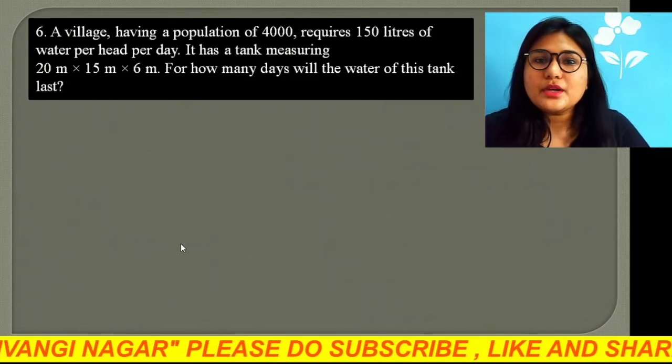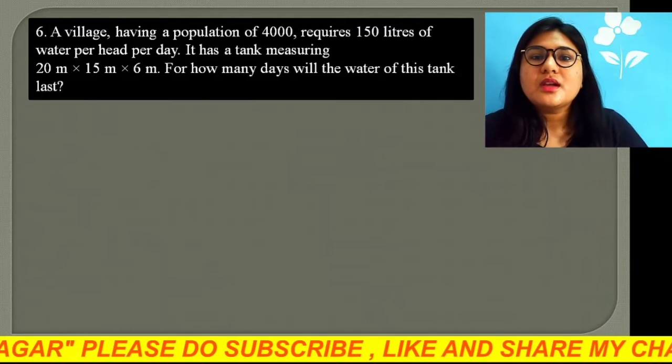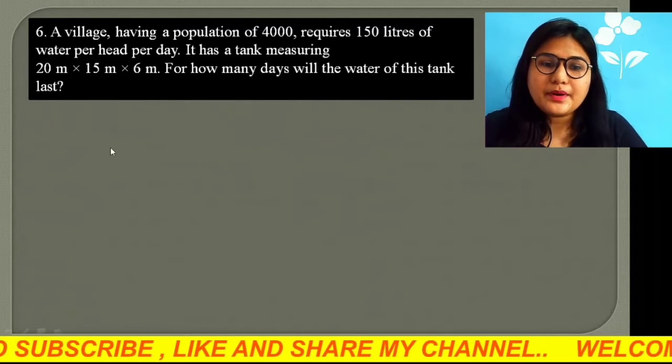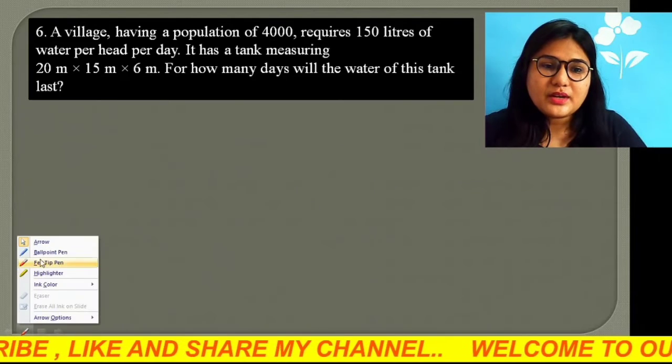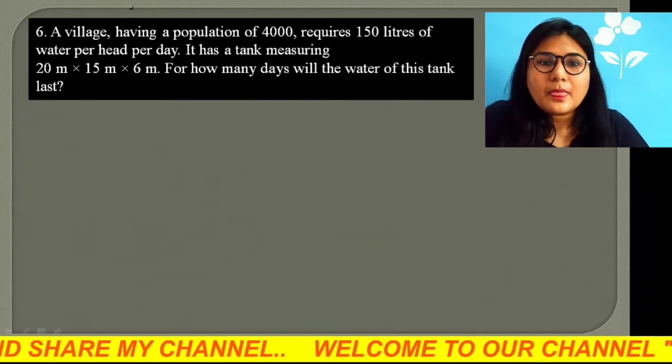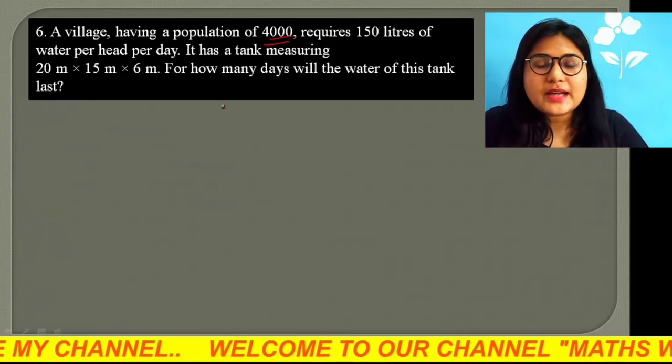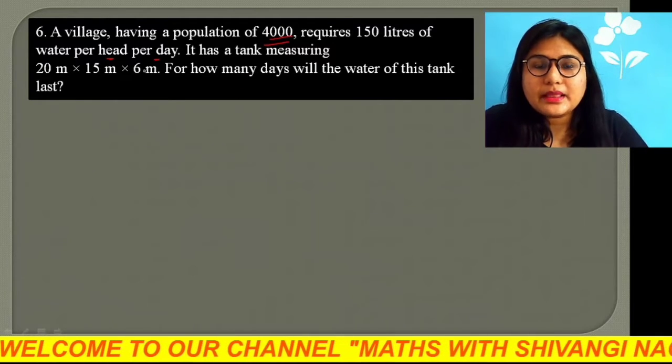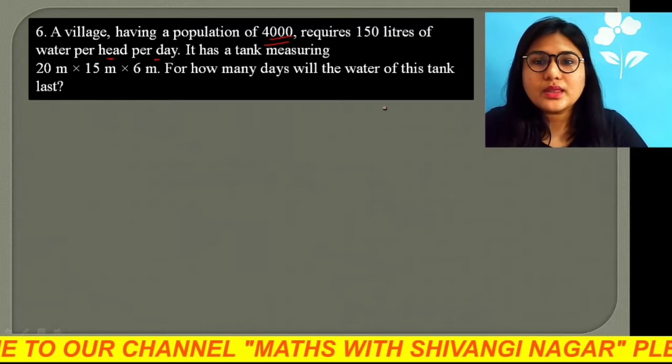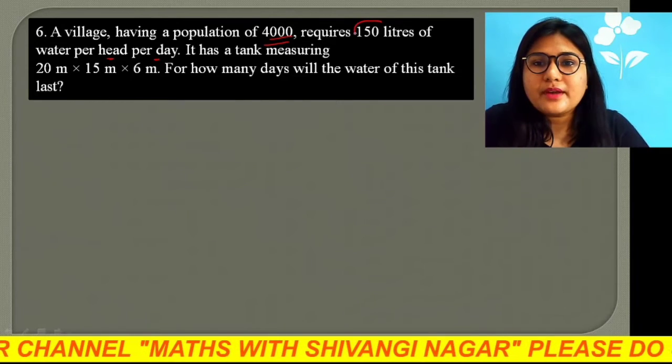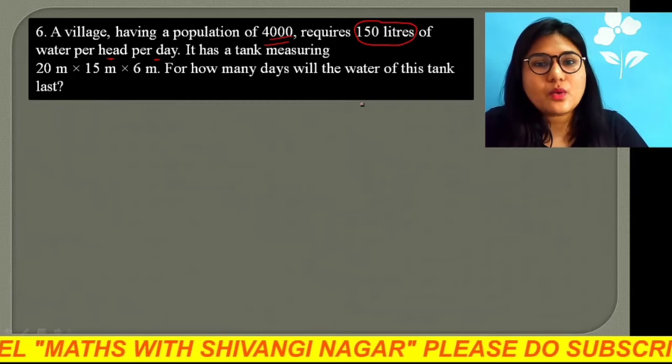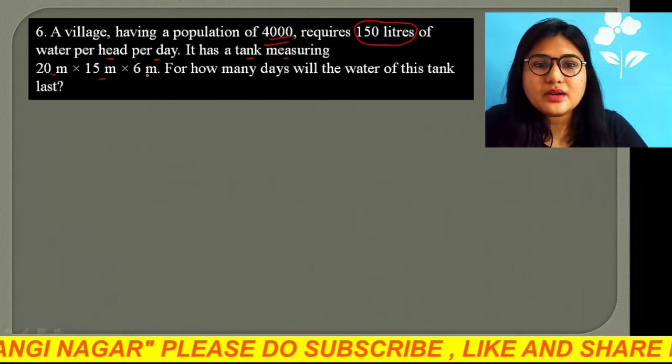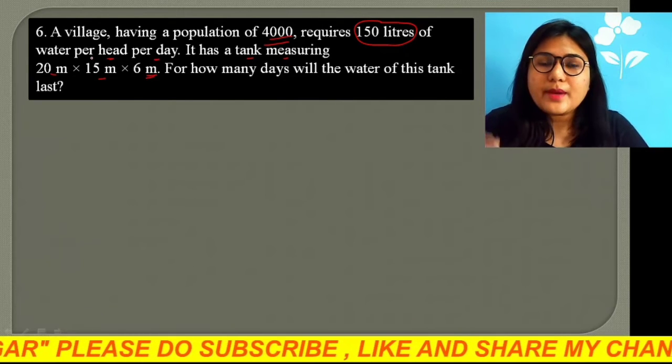A village having a population of 4,000 requires 150 liters of water per head per day. So a village in which you have a population of 4,000, and per head per day means how much water in one day? 150 liters of water is required. It has a tank measuring 20 meter by 15 meter by 6 meter.